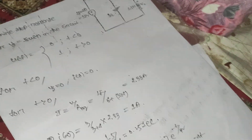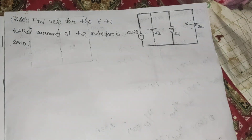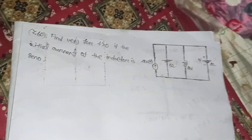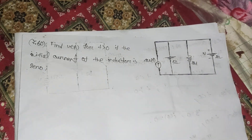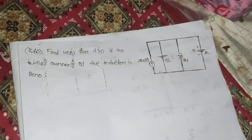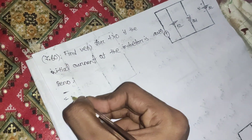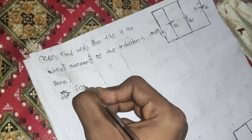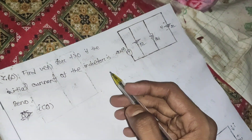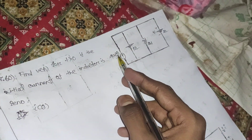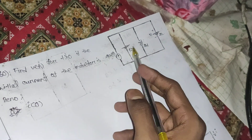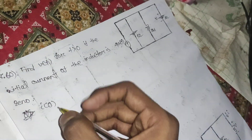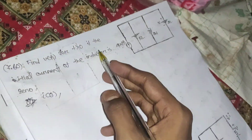Now let's tackle problem 7.60. The problem says: find v(t) for t greater than 0, given that the initial inductor current is 0. Since i(0) = 0 is already given, we don't need to calculate it separately.